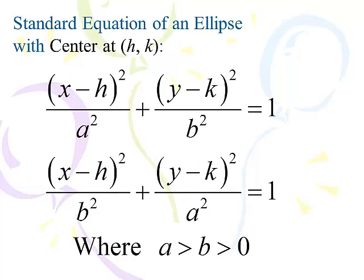We won't always leave the center at the origin — we'll move it to (h, k). This shouldn't be a surprise: we use (x − h) and (y − k). A² is still always the big value. If a² is under the x, the major axis is horizontal; if under the y, it's vertical.